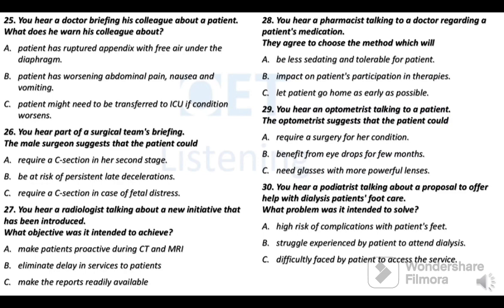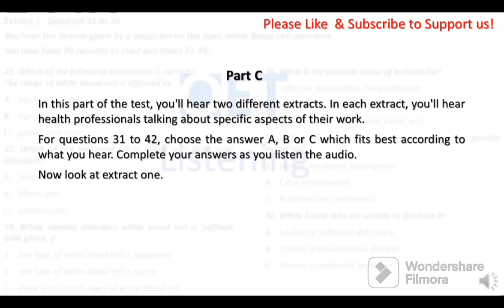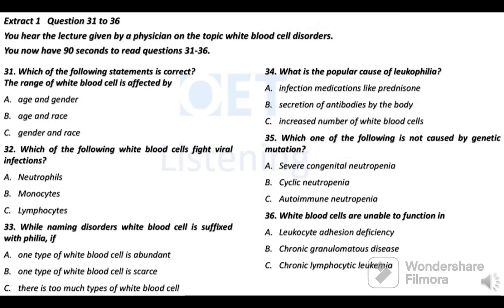That is the end of Part B. Now look at Part C. In this part of the test, you'll hear two different extracts. In each extract, you'll hear health professionals talking about aspects of their work. For questions 31 to 42, choose the answer A, B, or C which fits best according to what you hear. Complete your answers as you listen. Now look at Extract 1, questions 31 to 36. You hear a lecture given by a physician on the topic White Blood Cell Disorders. You now have 90 seconds to read questions 31 to 36.